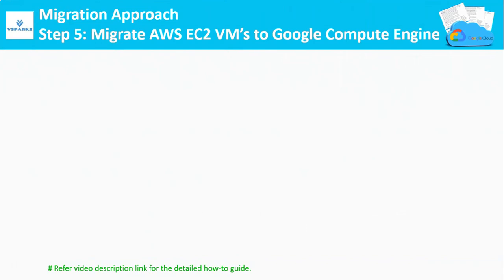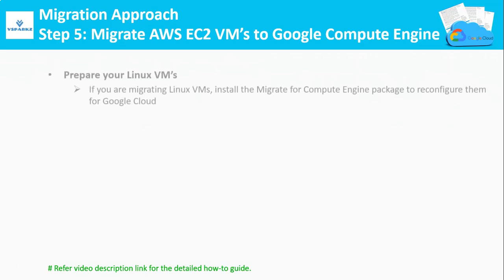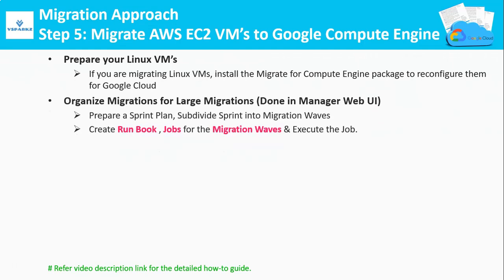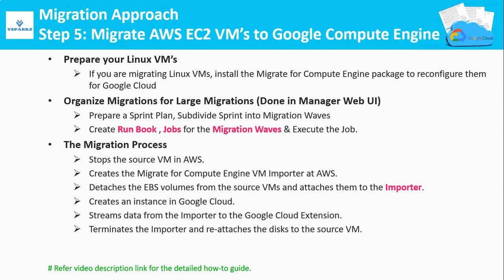Step 5: Migrate AWS EC2 VMs to Google Cloud Platform. If you are going to migrate Linux VMs, reconfigure your base OS to be compatible with Google Cloud. This is achieved by executing some scripts in your source VMs — those scripts are available in Google Cloud documentation. When migrating a huge number of VMs, you cannot do it in a single stretch. As a best practice, you need to prepare a sprint plan and subdivide the plan into migration waves. This migration wave is created in the web UI of the Migration Manager. Within a single migration wave, you need to prepare a runbook and jobs for your migration. Once you execute the job, your actual migration starts. There are different migration operations you can do within a job.